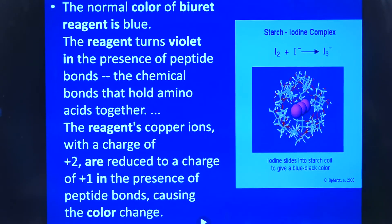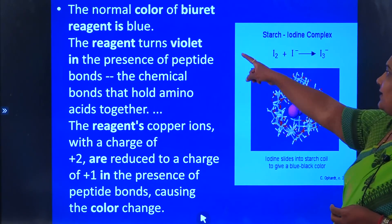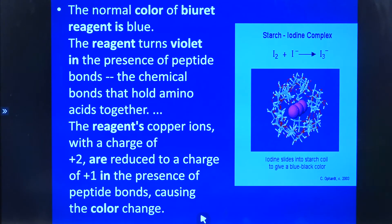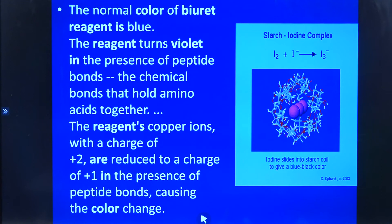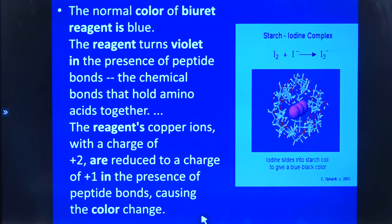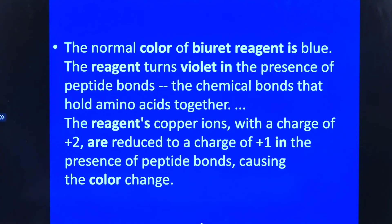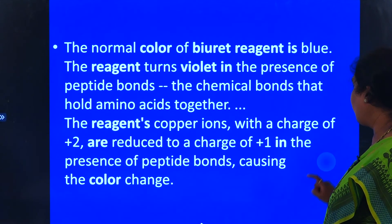The normal colour of biuret reagent is blue. The reagent turns violet in the presence of peptide bonds — the chemical bonds that hold the amino acids together. The reagent's copper ions, which carry a charge of plus 2, are reduced to a charge of plus 1 in the presence of peptide bonds, causing the colour change. That is how it appears to be violet.